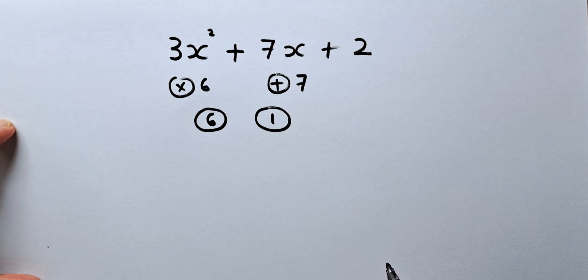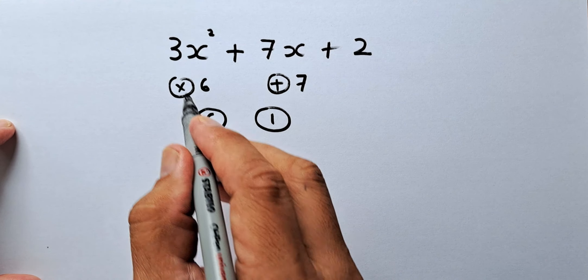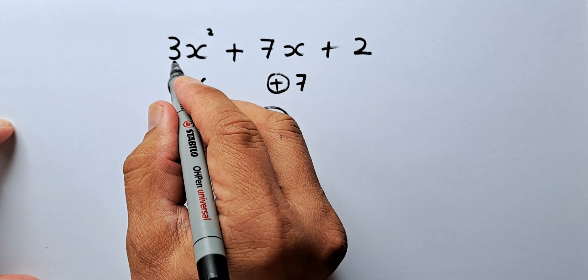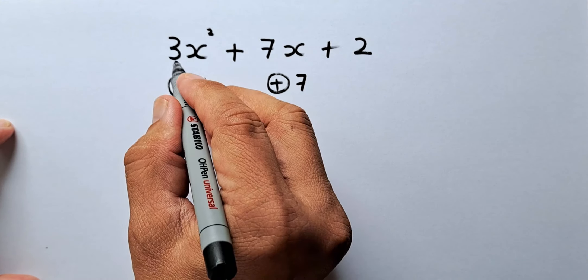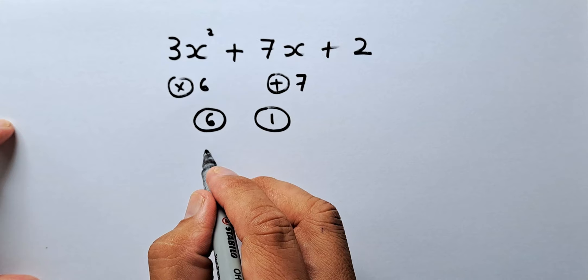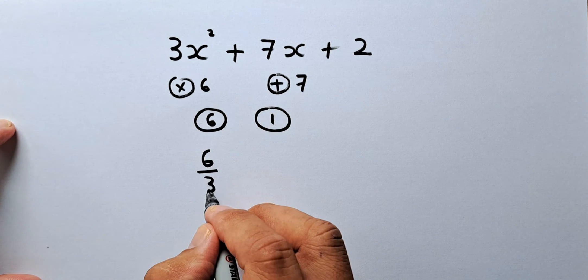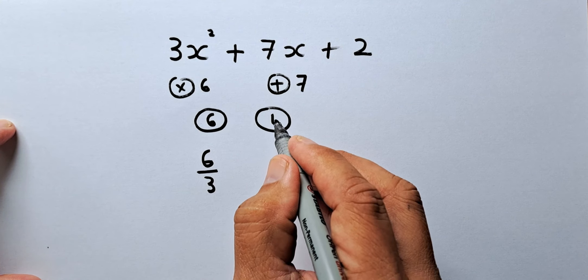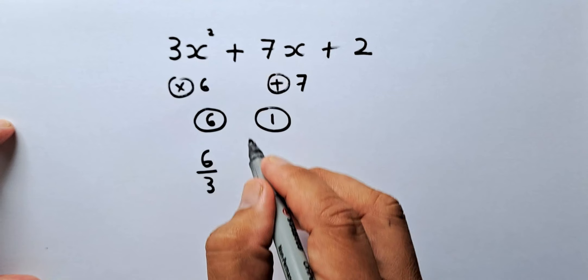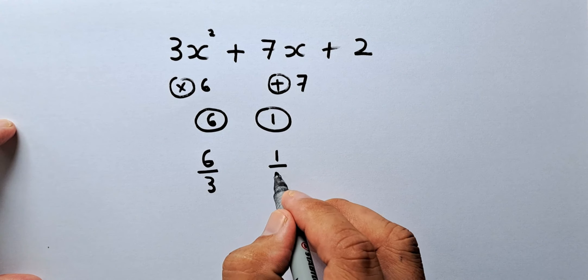Step 3, you are going to take this number and divide by a, or the first digit. 6 divided by 3 is going to be 6 over 3. And the second factor, 1 divided by 3 is going to be 1 over 3.